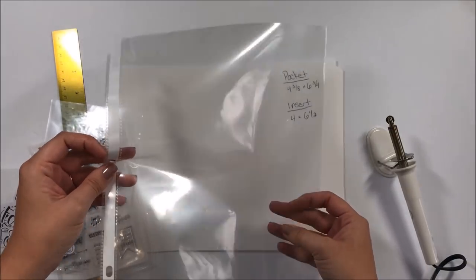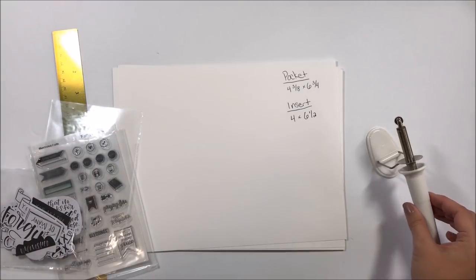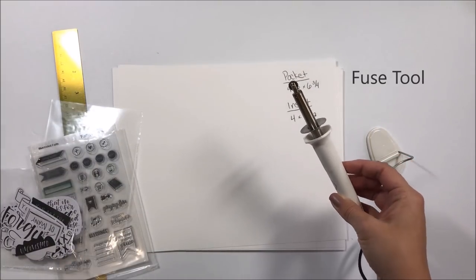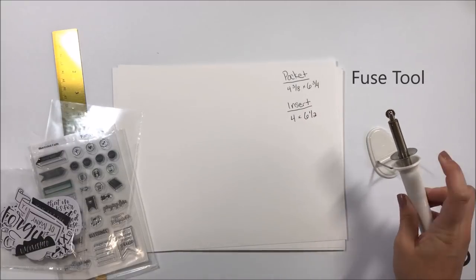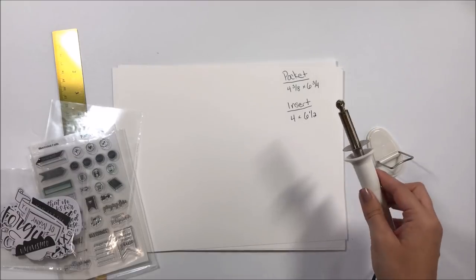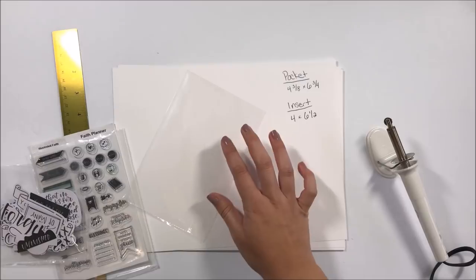You do need one of these little tools here. This one is from Project Life and this gets super super hot. It's really hot right now, it's all plugged in, and that little piece there actually moves along the plastic and melts the plastic, so that's how you're able to seal your pockets.